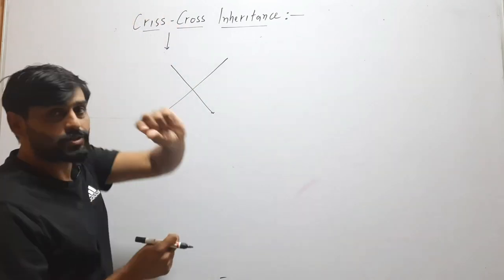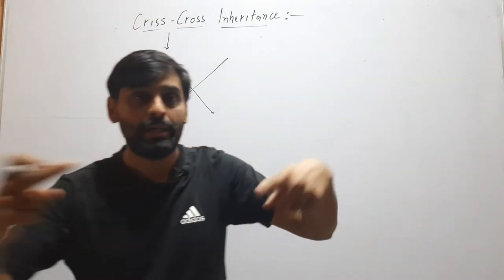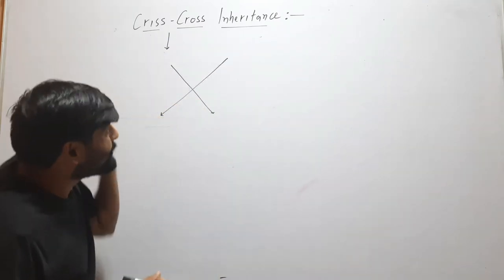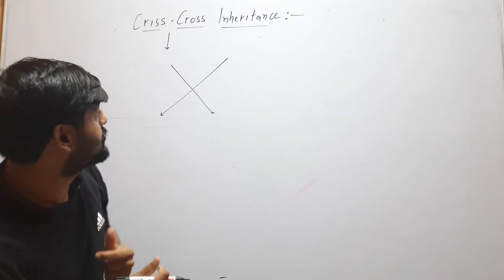Now we know what is Criss-Cross. When two lines cross each other and make a cross, this is called Criss-Cross. What is Criss-Cross inheritance now?